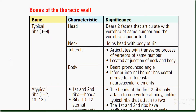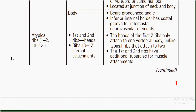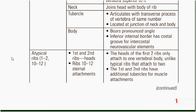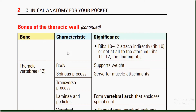Atypical ribs are rib numbers one, two, ten, and twelve. Ribs ten and twelve have sternal attachments. The head of the first two ribs only attaches to one vertebral body, unlike typical ribs that attach to two vertebral bodies. The first and second ribs have additional tubercles for muscle attachment. Ribs ten and twelve attach indirectly or not at all to the sternum and are also known as floating ribs.